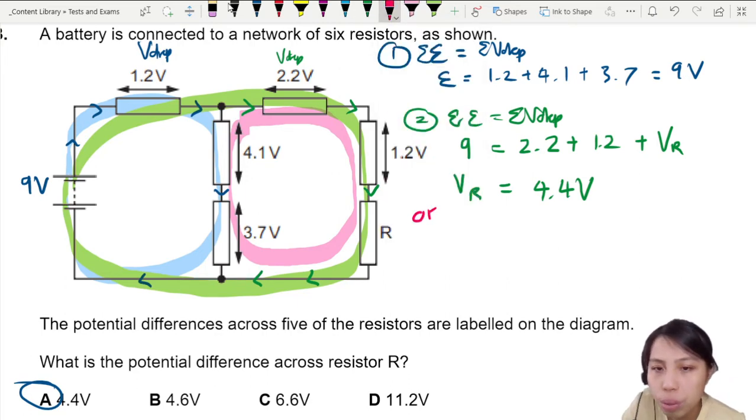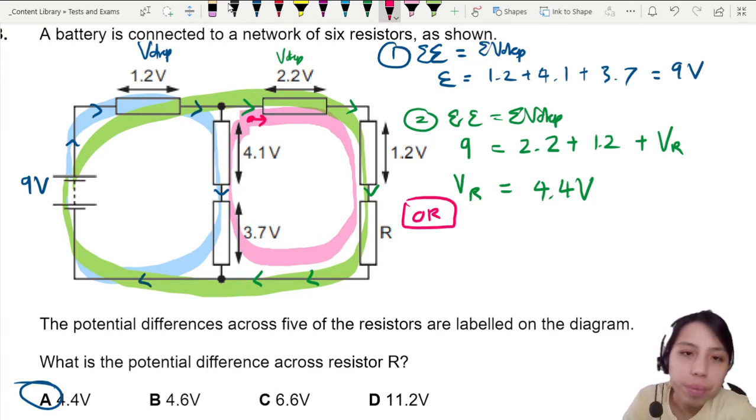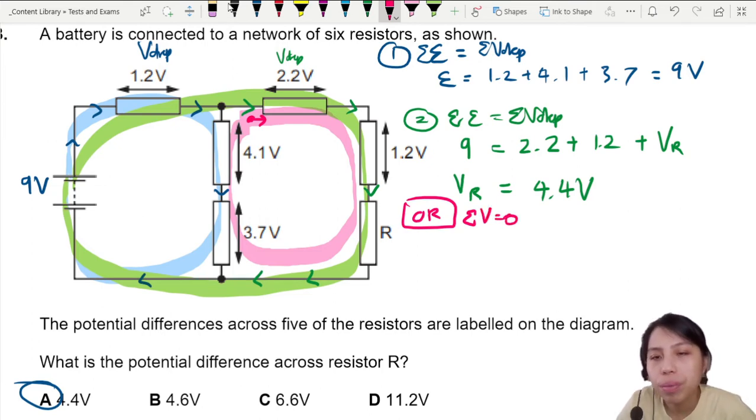Can't you draw this loop and just find everything? Can. You gotta be careful. Or alternatively, let's say I start in this corner and I move down. There's no EMF here, so it's all just potential drop only. Okay, so the easier way to do this is to say in the loop there's no battery.